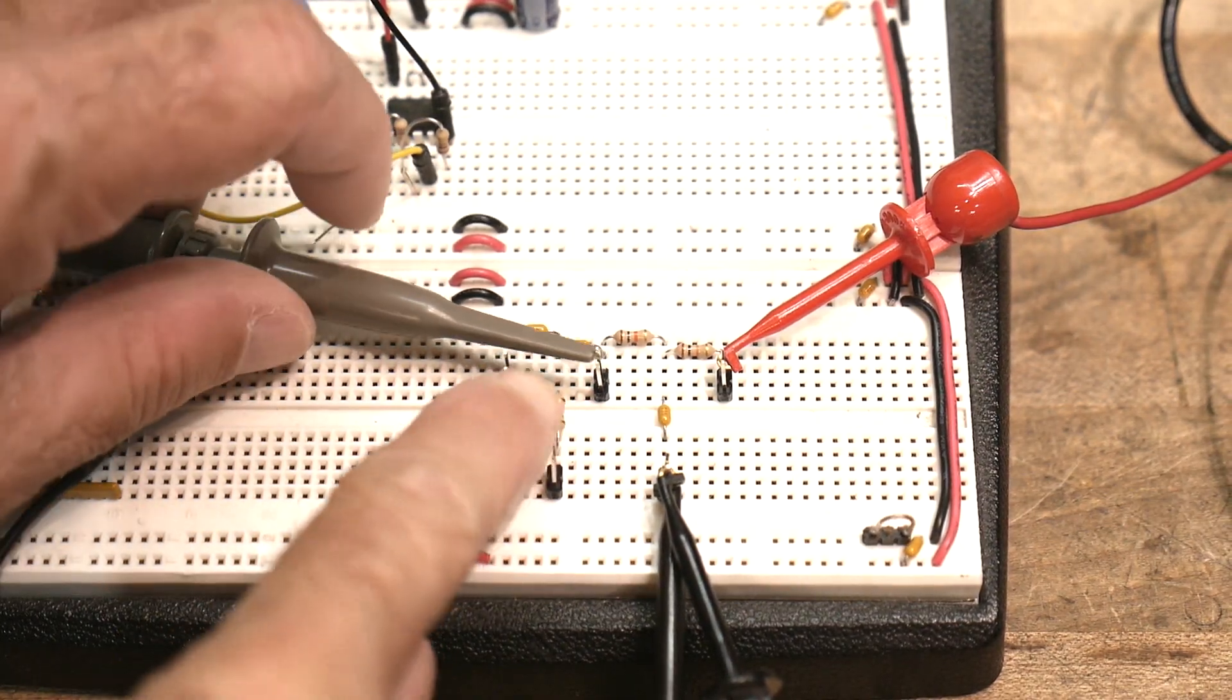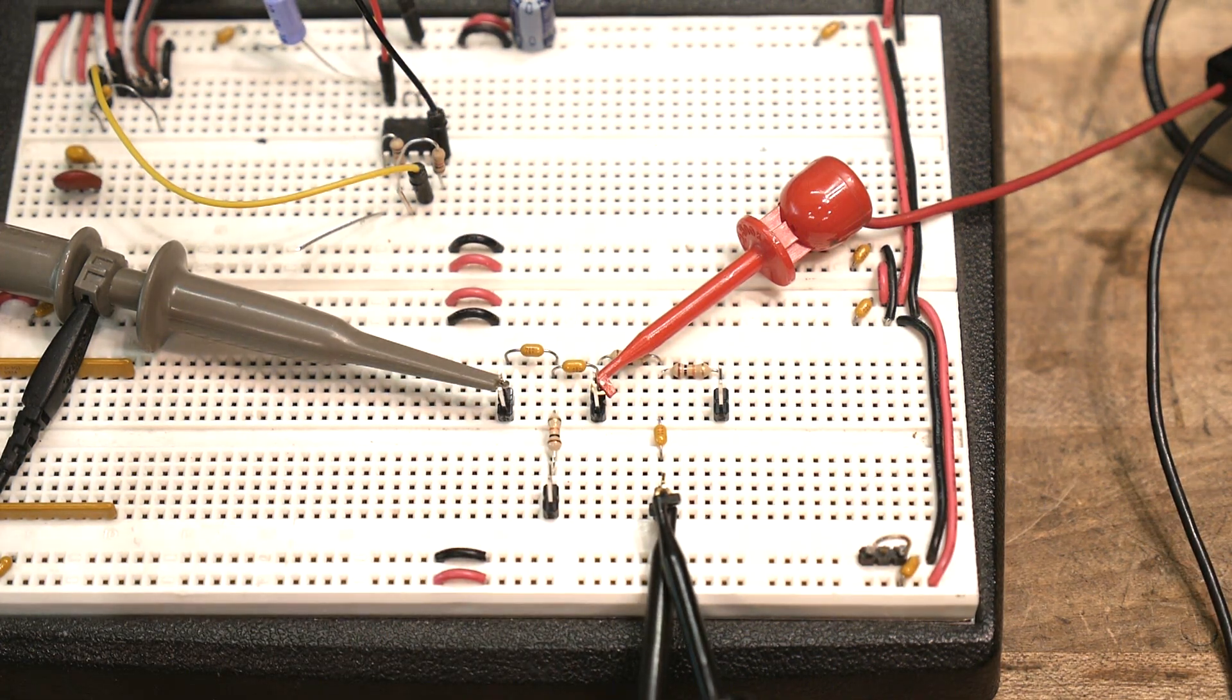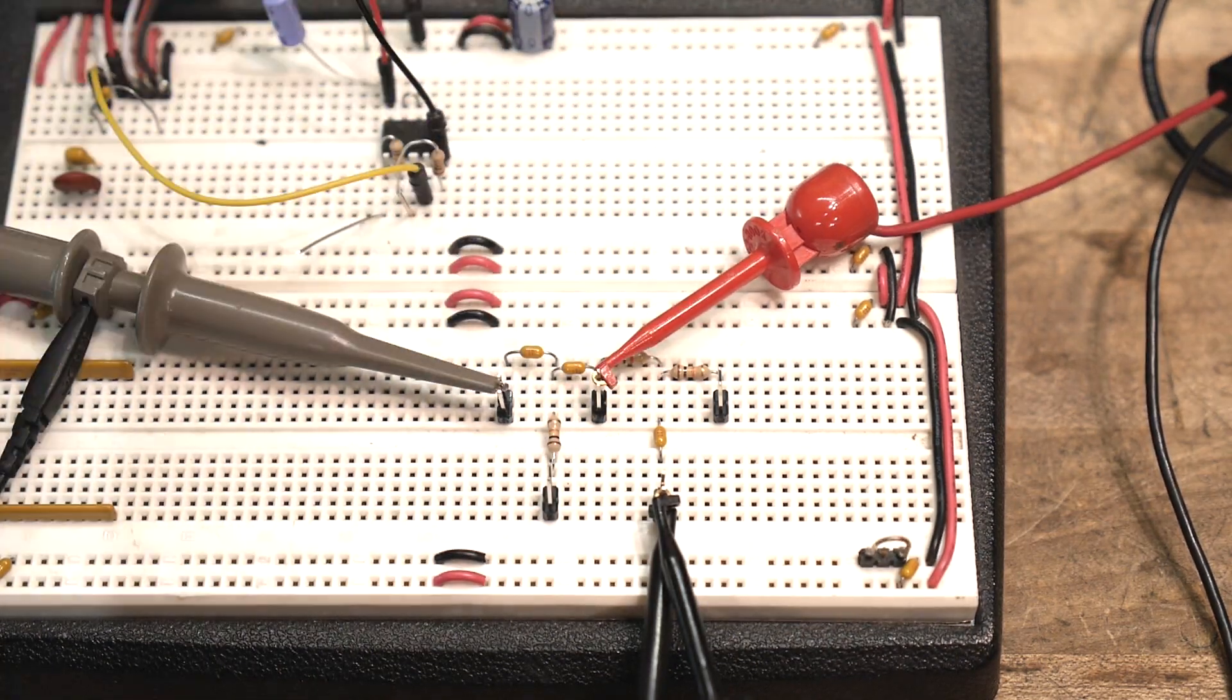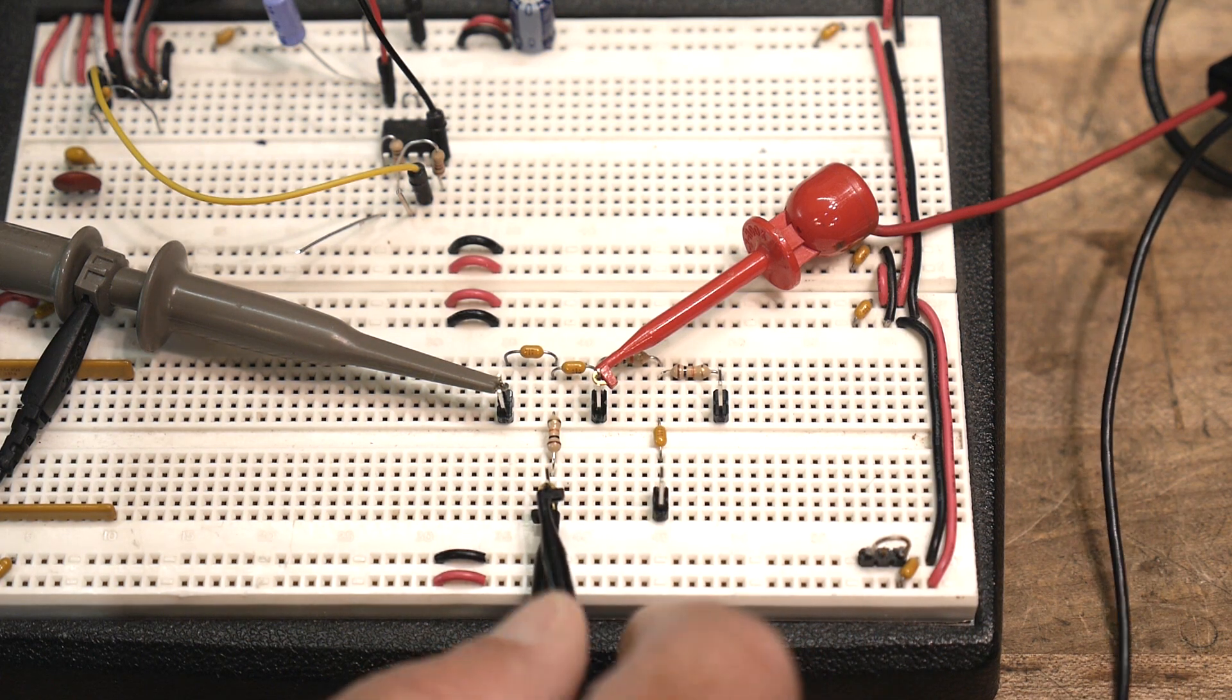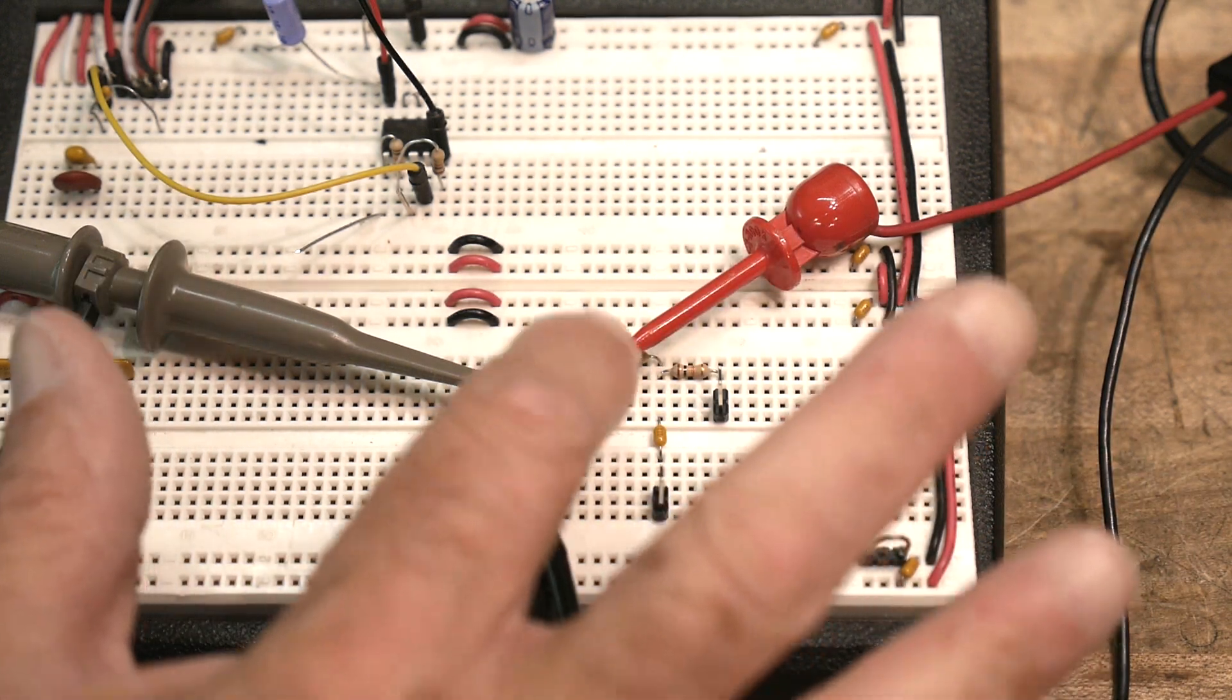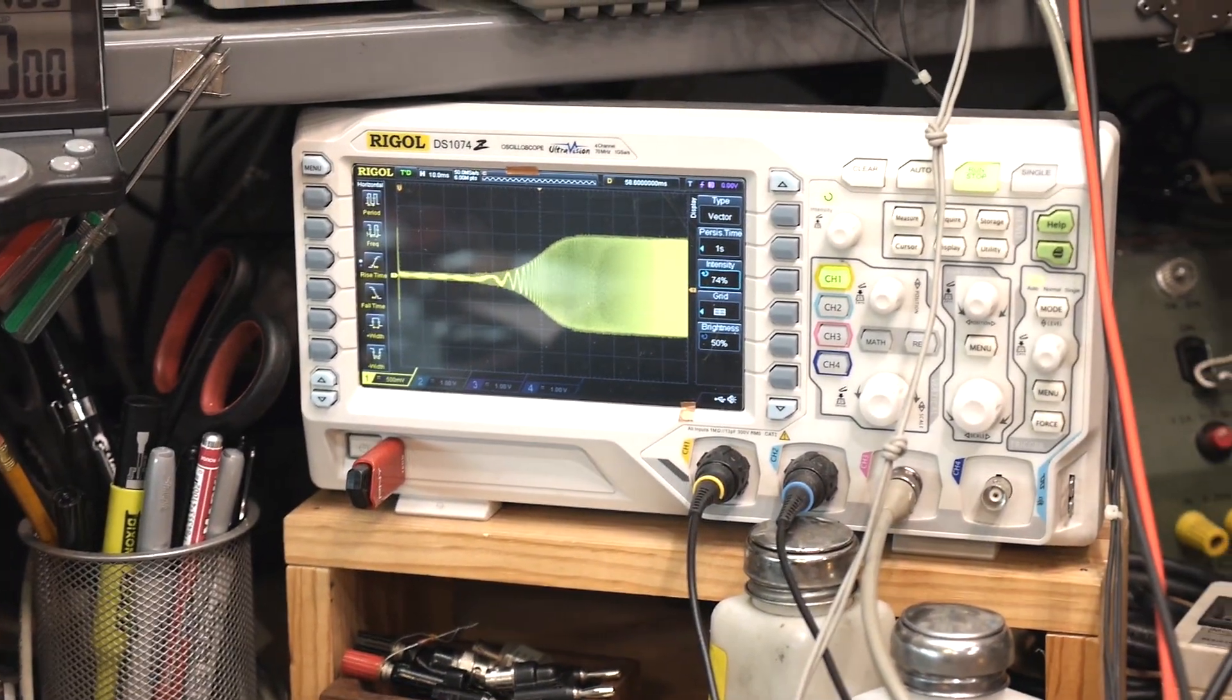So let's go to the other one. This is the other T circuit. So we'll move our input and outputs over here. Now we need to move our grounds over. All right. That looks good. So we are coming in here, going through the capacitors and going out here.